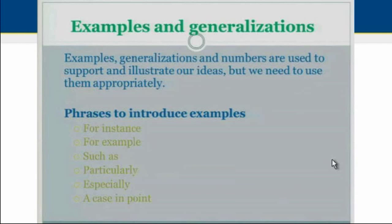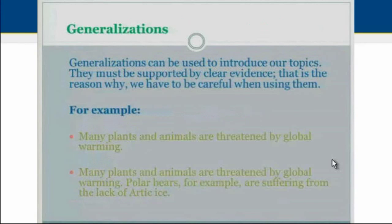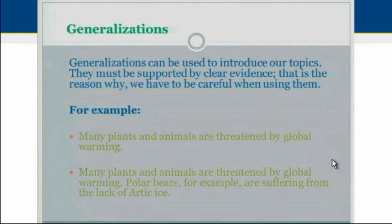Generalizations can also be used to introduce our topics, but they must be supported by clear evidence. For example, the generalization 'many plants and animals are threatened by global warming' must be followed by specific evidence, such as: 'many plants and animals are threatened by global warming; polar bears, for example, are suffering from the lack of Arctic ice.'